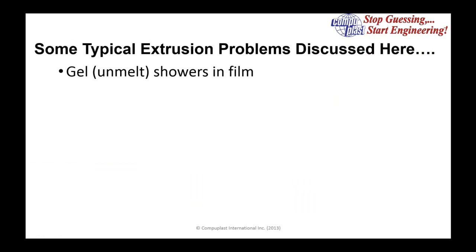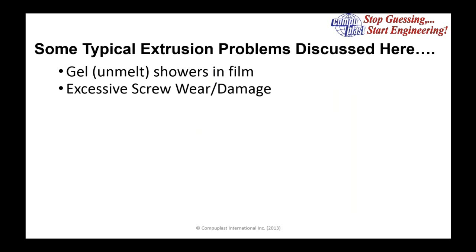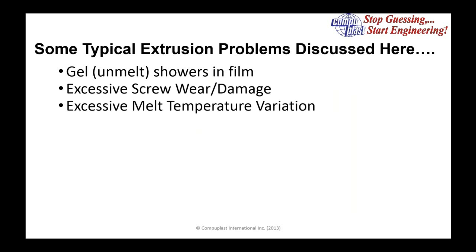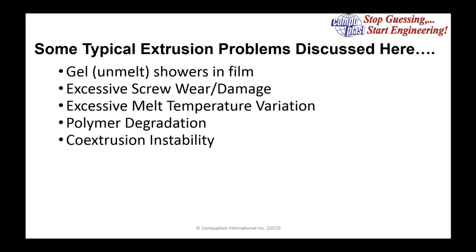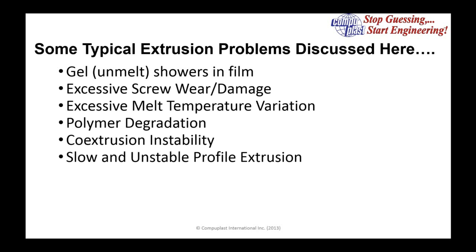The problems we're going to discuss today involve gels or unmelts — specifically unmelt showers in a film sample — excessive screw wear and damage, excessive melt temperature variation, polymer degradation, some coextrusion instabilities, and slow and unstable profile extrusions. These are a variety of problems in extrusion that we'll present today.